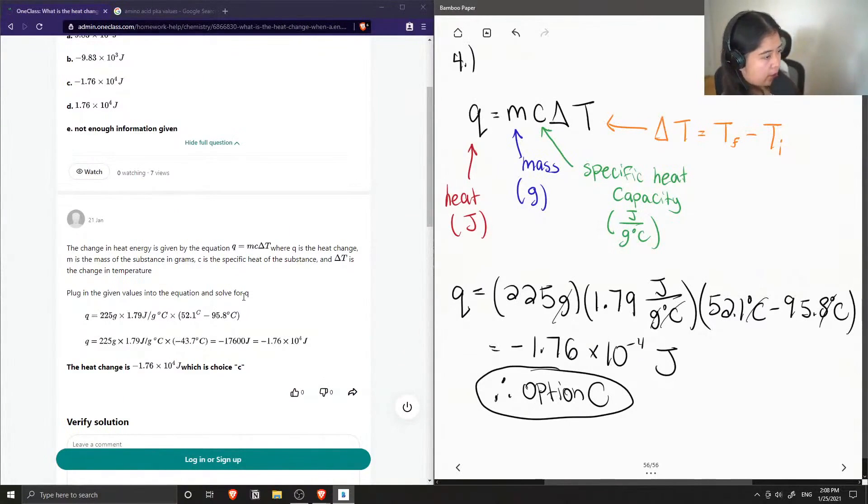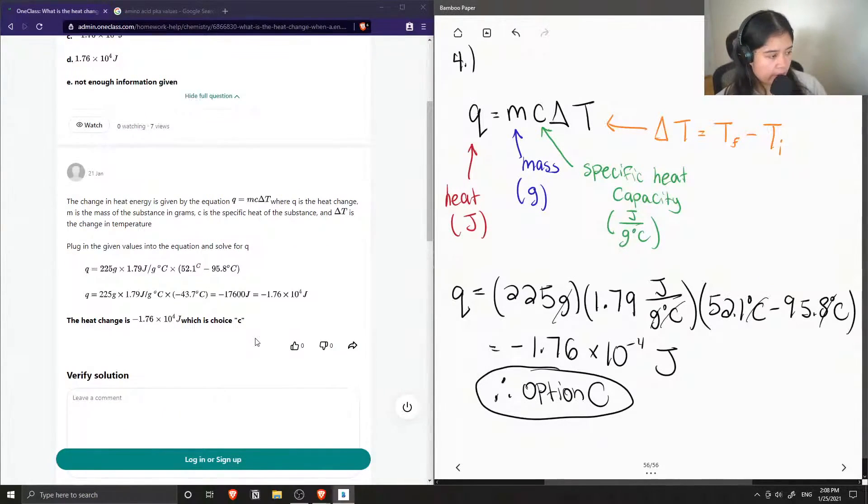Where Q is the heat change, M is the mass of the substance in grams, and C is the specific heat of the substance, and delta T is the change in temperature. They got the same negative 1.76 times 10 to the negative 4 joules.